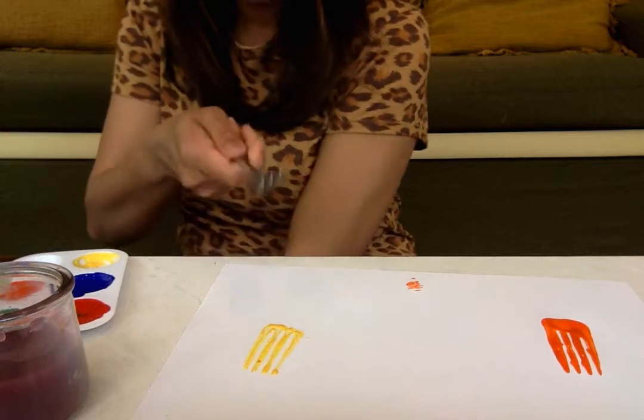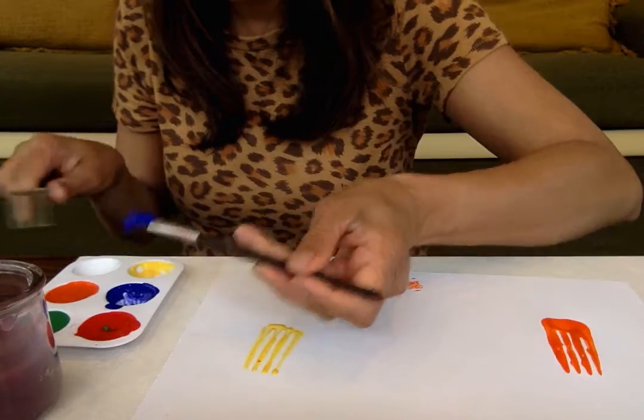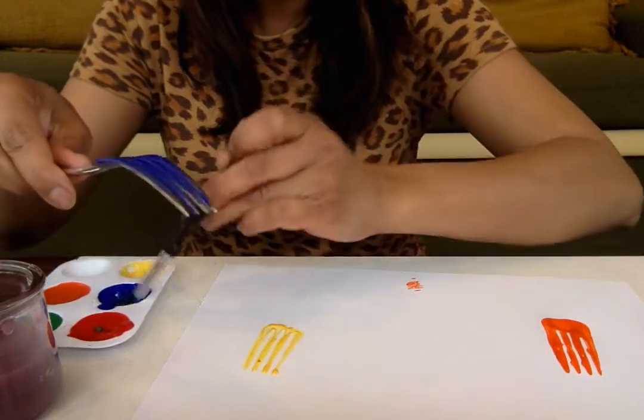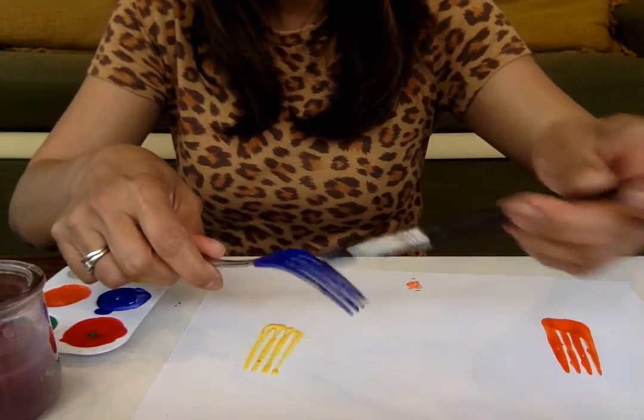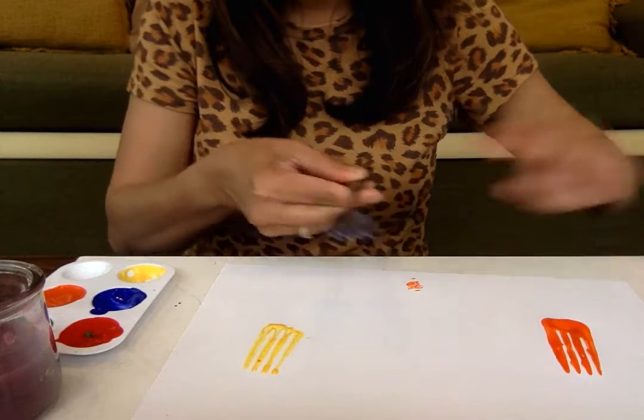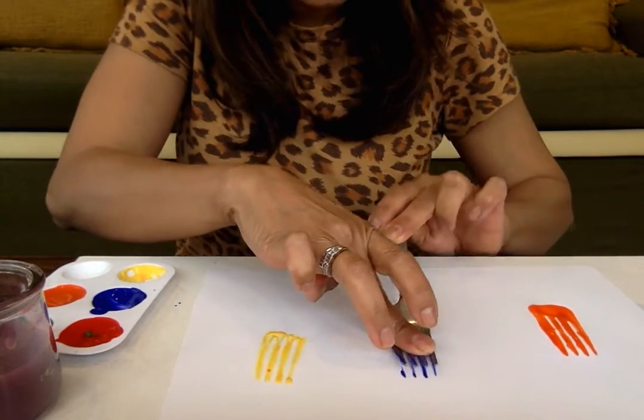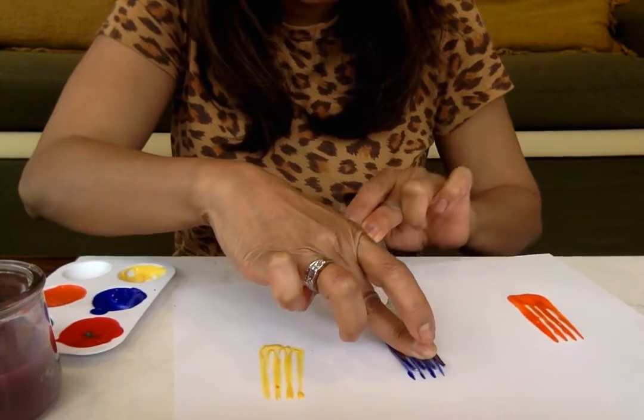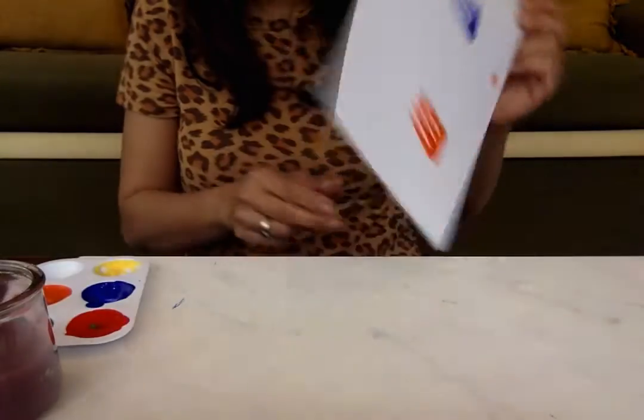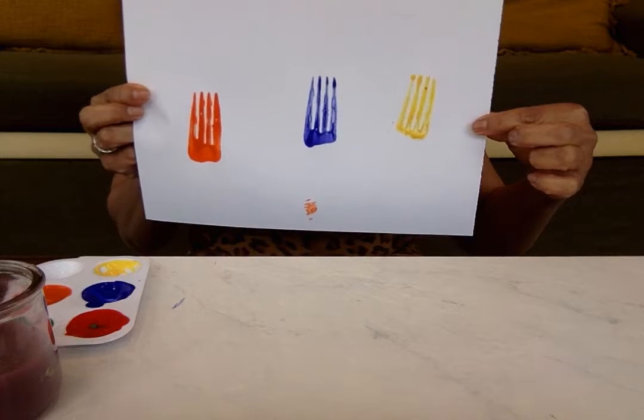Clean my fork again and this time I'm going to use blue. Put it at the back and down. Down and down. That was loud. This is going to be my three flowers.